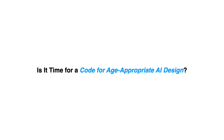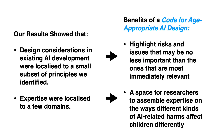Our results showed that we may require new thinking in the area of AI for children. There are at least two reasons why a unified code for age-appropriate AI design would be beneficial. First, our results showed that while designers and researchers did address some common principles in their designs, these considerations were localized to a small subset of principles. A broad, age-appropriate AI design code may thus not only serve as a reminder of other principles, but highlight risks and issues that may be no less important than the most immediately relevant ones.